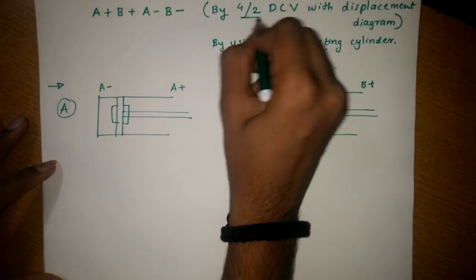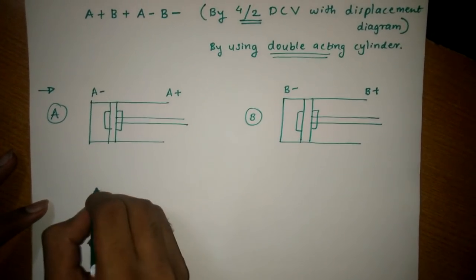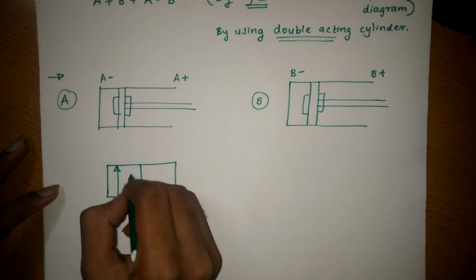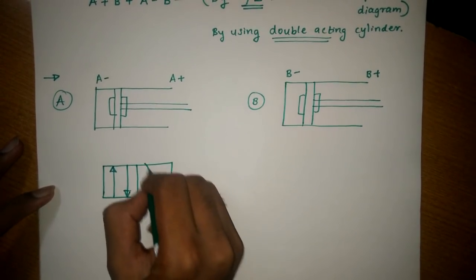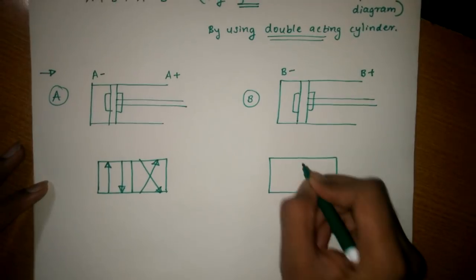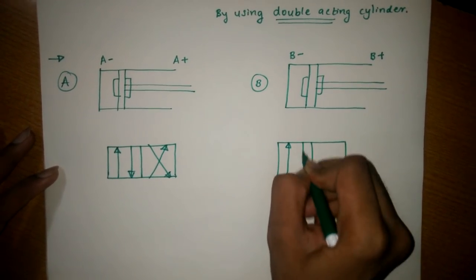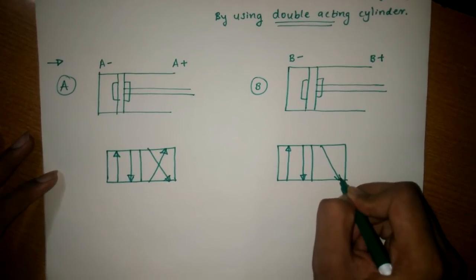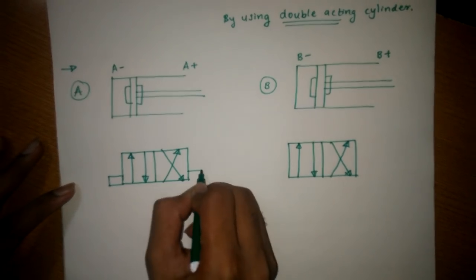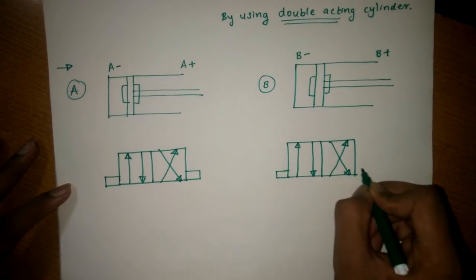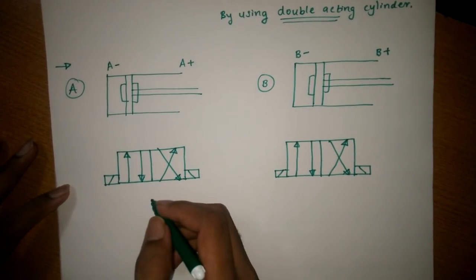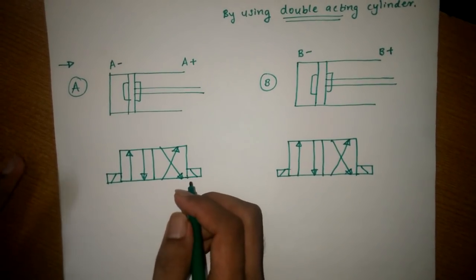They have told us to use 4/2 valves, so you have to draw the 4/2 valve on both sides. Then you have to draw the solenoid symbol for all the two valves. The symbol of the solenoid is like this. The main part is the connections.